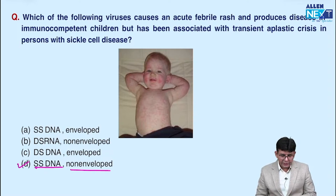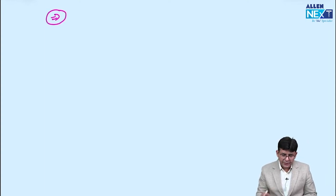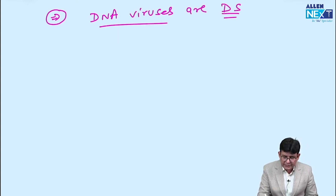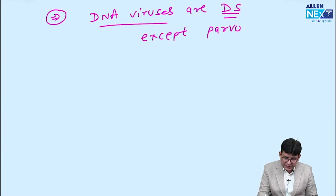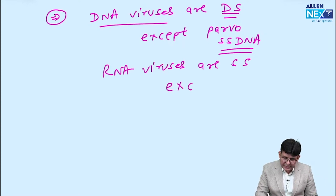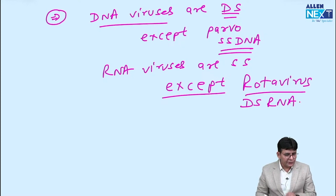You need to know certain key points so you won't be confused. Remember: all DNA viruses are mostly double-stranded, except Parvovirus, which is a single-stranded DNA virus. For RNA viruses, they are single-stranded except the Reoviridae family — that is, Rotavirus is double-stranded RNA.